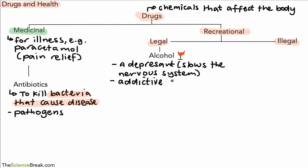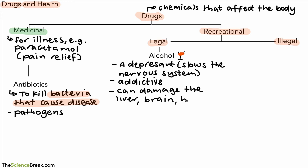One of the other issues with alcohol is that it is addictive. It's legal, but it's also addictive. If alcohol is used over a long period of time in excessive amounts, it can damage various parts of the body — it can damage the liver, the brain, and the heart.